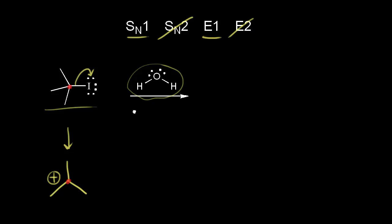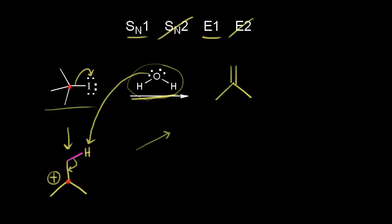If water acts as a weak base, it can take a proton from one of the carbons next to the carbon in red. Those electrons move in to form a double bond, which eliminates the formal charge on the carbocation. That gives us an alkene as the product — this is the E1 mechanism pathway.